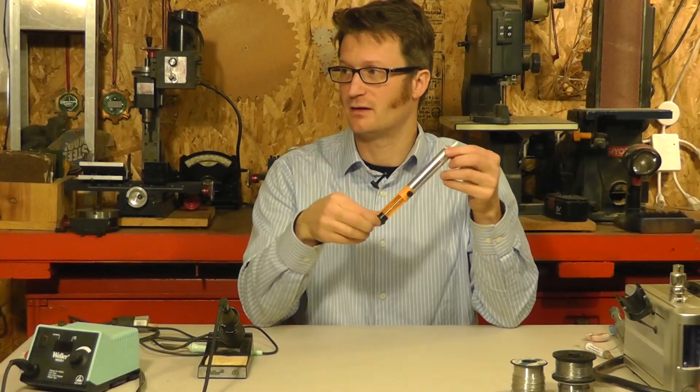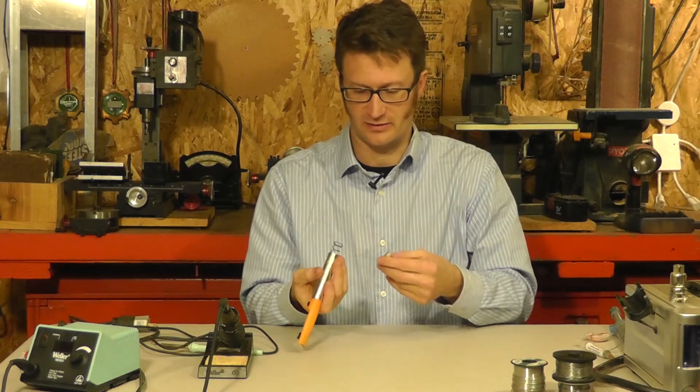And then let's talk about desoldering tools. There's two basic kinds. You've got ones like this that are solder suckers. And so basically, you can take and push down the thing, and there's a little piston in here. And then when you push this button right here, it pops up and it sucks the solder into it. And then after a little while, you just come and you empty it out into the trash.